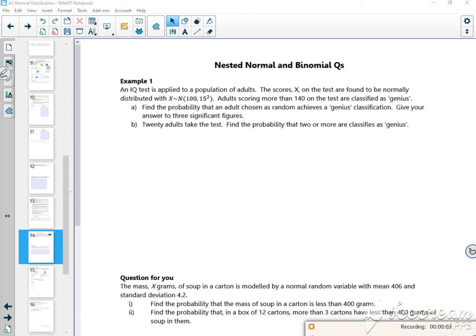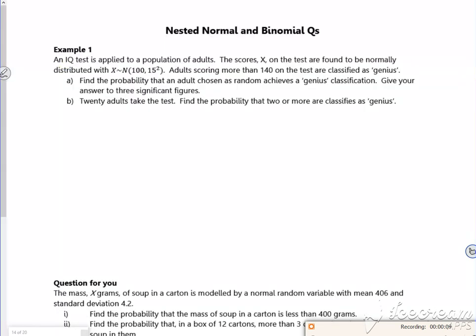Hi everyone, this is the first video for lesson four and it's all about nested normals and binomials, jumping around between binomial and normal distributions. An IQ test is applied to a population of adults. The scores X on the test are found to be normally distributed with an average of 100 and a standard deviation of 15.